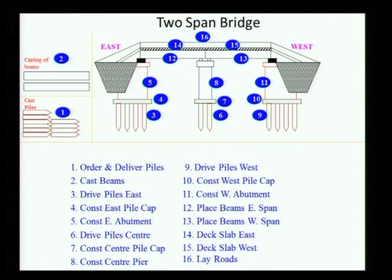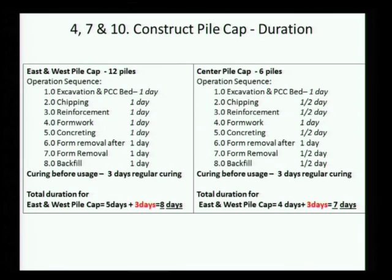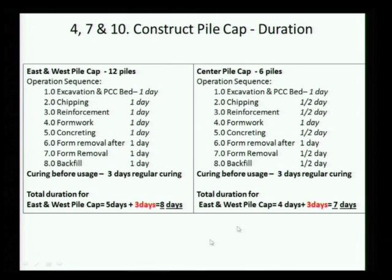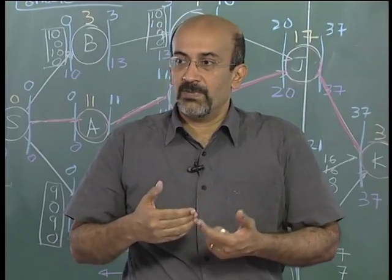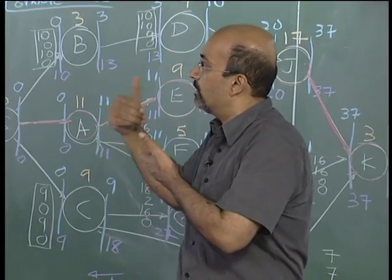Now, we go to the problem which we want to discuss, which is the two span bridge. You remember we had 16 activities in the two span bridge and we had actually talked about how to calculate the duration of these activities. For example, this was the construction of the pile cap. We talked about the various sub activities involved in the pile cap and then went on to calculate the duration.